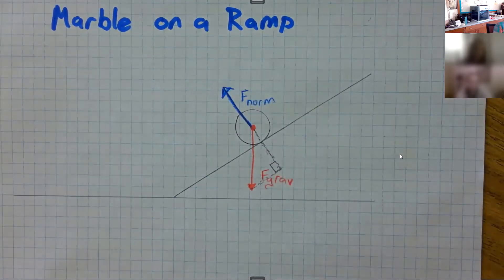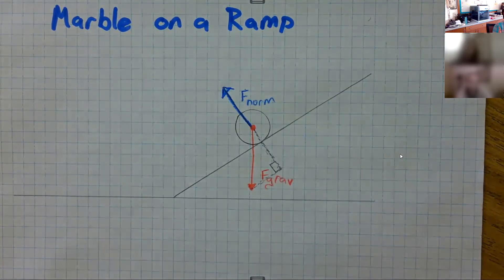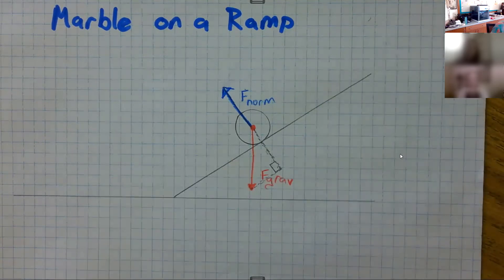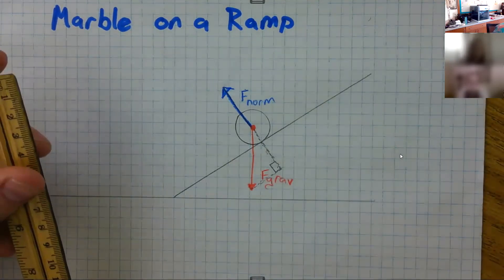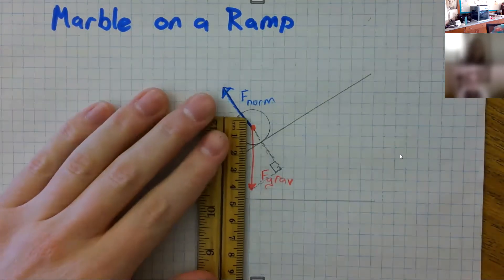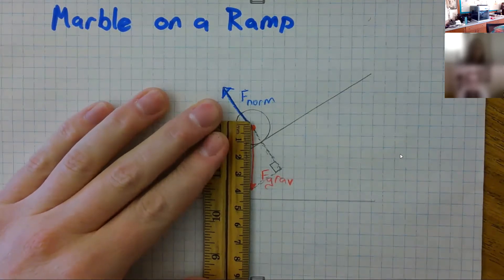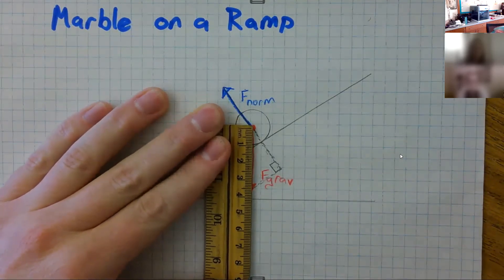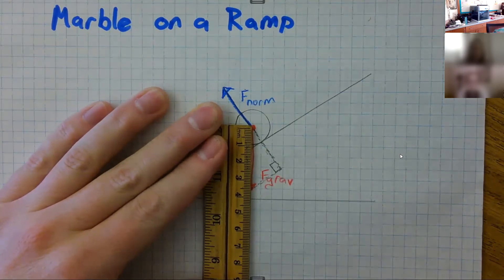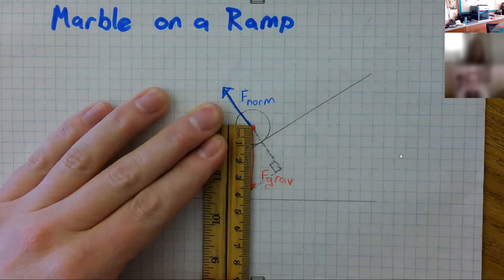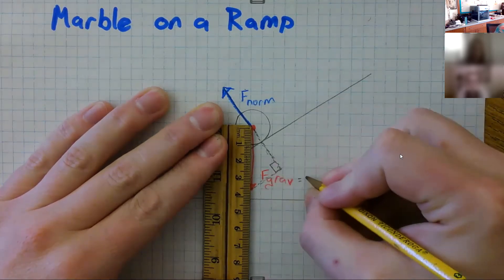So what's going to happen when we add these forces together? What are we actually going to get? Well, we're going to get something that's a little bit down and a little bit to the left, and we can figure that out with math. We can figure out how much down and how much to the left. So let's first measure gravity points straight down. How much is it pointing down? Let's measure it. That looks to me like 38 millimeters. I'm just going to say 38.